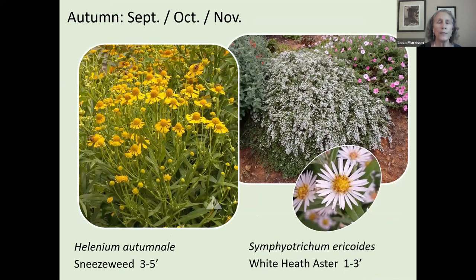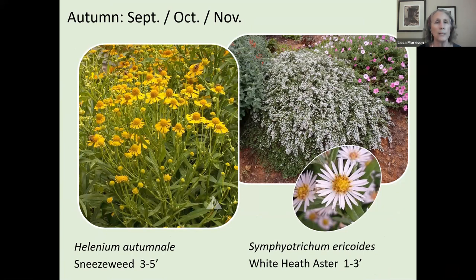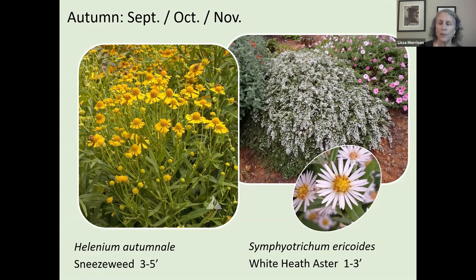Here are two more fall options: a white aster and sneeze weed, which blooms into frost and will be covered with many different kinds of bees. I don't know why it's called sneeze weed because I don't think it makes people sneeze — I don't like that common name, but we have to stick with it. Lots and lots of bees will be on this one.